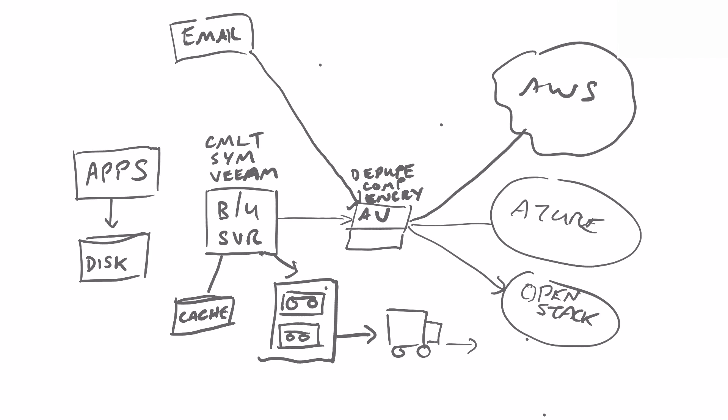Again, AltaVault will do inline dedupe, inline compression, and inline encryption, then send the data to whichever cloud provider you choose. When doing archiving, because you rarely need to read this data, AltaVault doesn't store a cache of the data itself — just the metadata. This allows it to store multi-petabytes worth of archive data in the cloud from a single AltaVault appliance, by only storing the metadata locally.